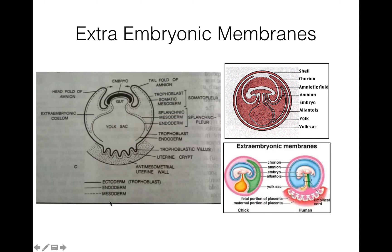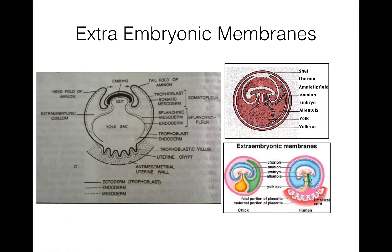Here you can see all these four layers: this is the chorion, amnion, allantois, and this is the yolk sac.